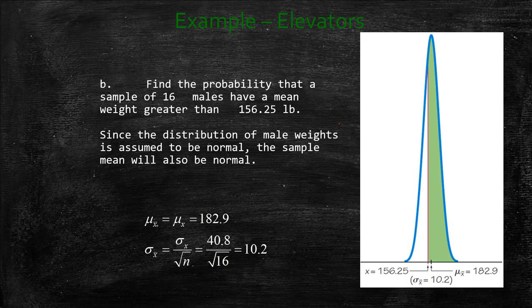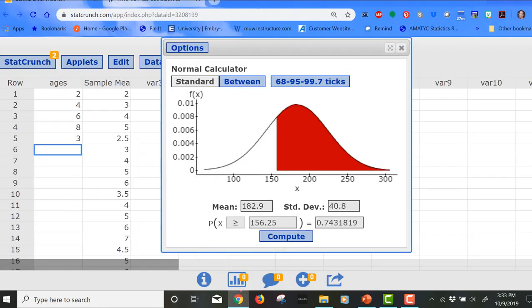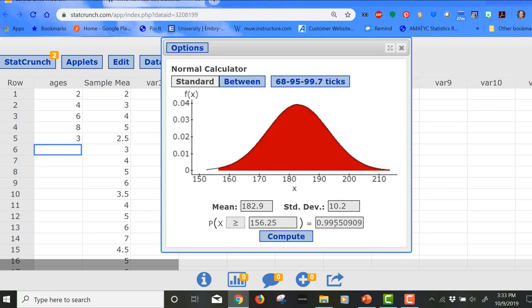So now we're looking at mu of x bar, and we know mu of x bar is going to be the same as mu, but sigma of x bar is going to change, right? That's sigma over the square root of n, and that's 40.8 divided by, in this case, the sample size of 16, which is 4, which we have 10.2. So when we go to StatCrunch then, now I'm going to change this to 10.2. The mean stays the same, and we're still trying to find if the x bar is greater than 156.25. So the only thing that changes is that standard deviation. Click Compute, and oh my word, it is 0.9955 chance that if 16 men get on the elevator, their mean weight will be greater than 156.25 pounds, which would indicate that it would be over the weight limit.